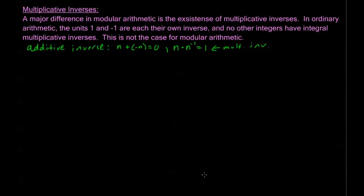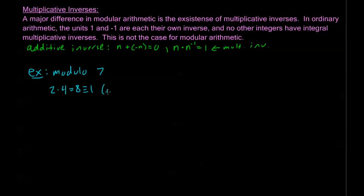Let's look at an example. If I want to look at modulo 7, I'm going to look at all of the elements modulo 7 and see which ones have inverses. If I look at 2 times 4: 2 times 4 equals 8, which is congruent to 1 mod 7. So 2 and 4 are inverses.